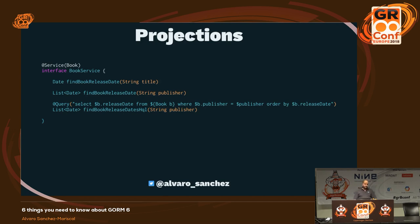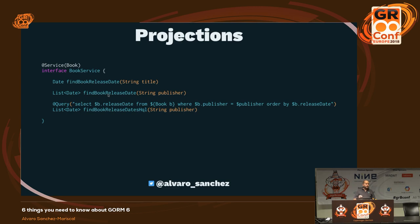You can also do projections. Say you have a book with a release date — instead of querying books, you can project a single property of a book. Or you could do a projection over all release dates of all books filtered by publisher. So this is quite powerful.